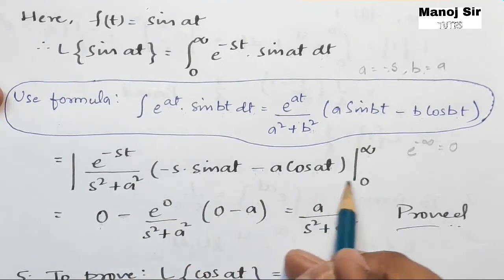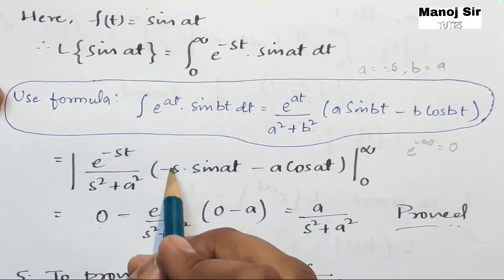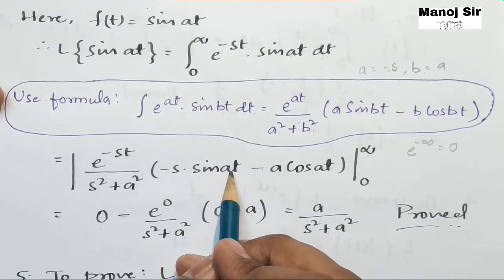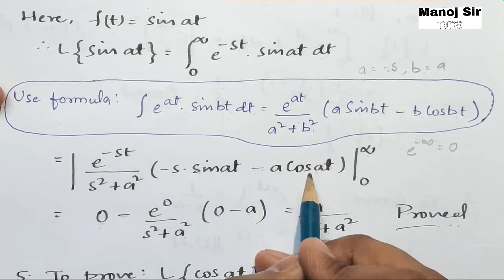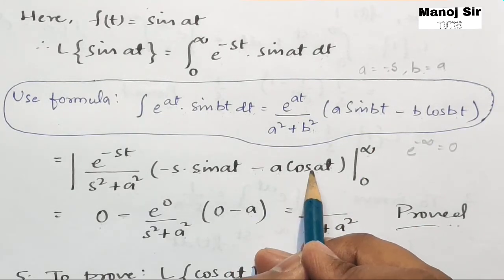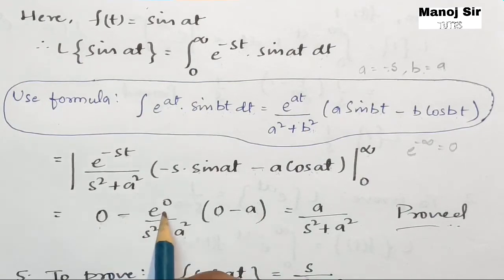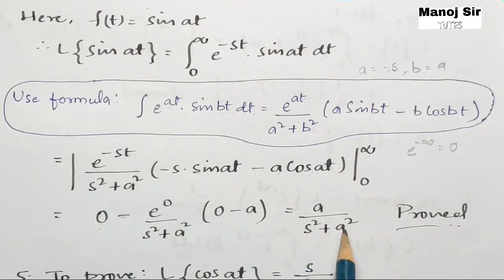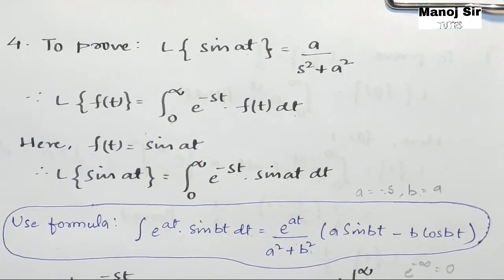Now applying the lower limit: put zero in place of t. We get e to the power zero upon s² plus a². Coming to the bracket: minus s into sin(a·0) gives minus s into sin(0) which is zero, so that term is zero. Then minus a·cos(0) — cos(0) is 1, so this gives minus a. Since the bracket yields minus a, we have minus 1 times minus a, giving positive a upon s² plus a². We have proved that L{sin(at)} = a/(s² + a²).